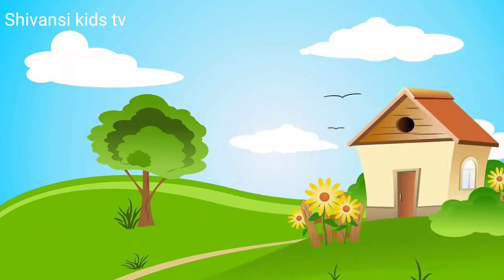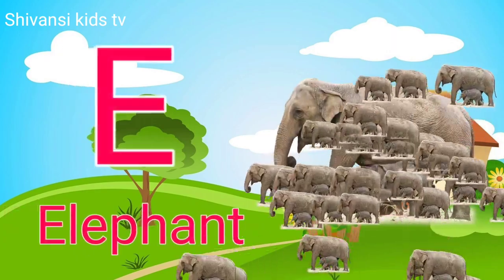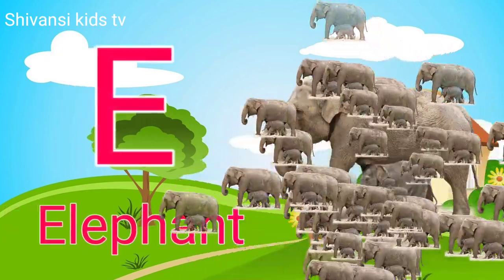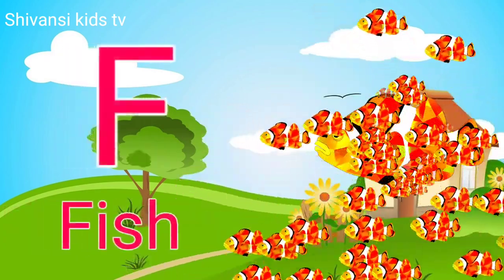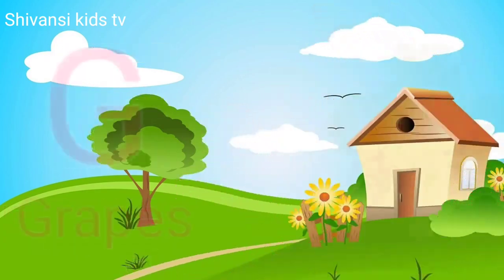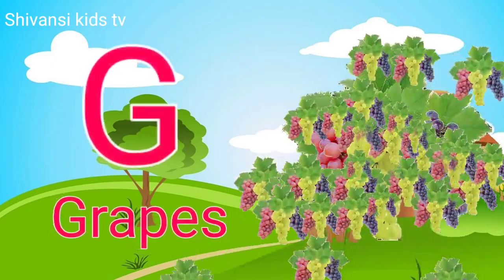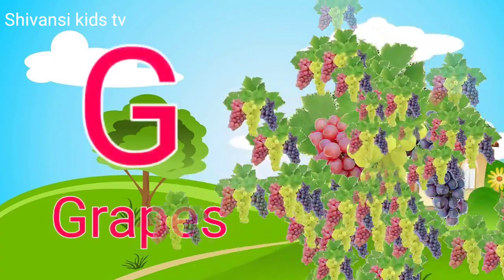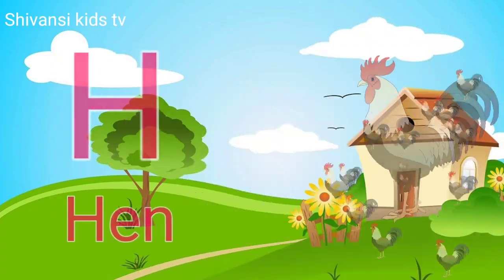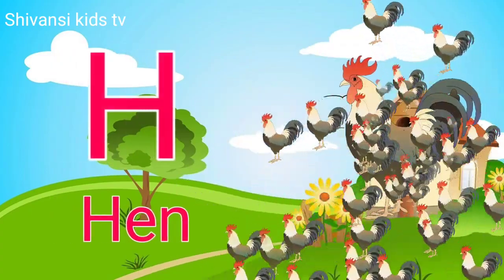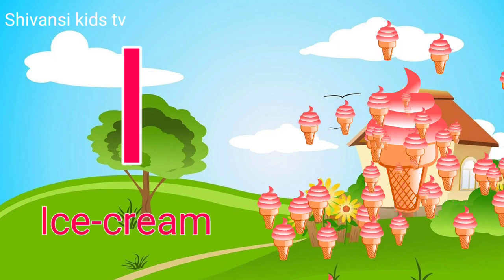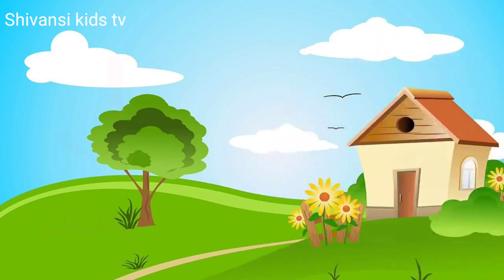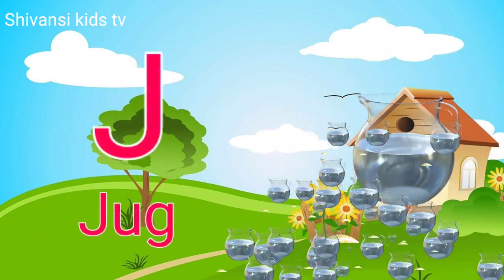E for elephant, F for fish, G for grapes, H for hand, I for ice cream, J for jug.